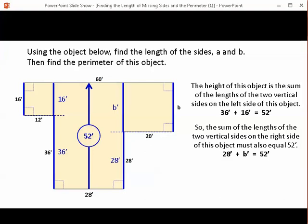So we have 28 out of 52. So if we subtract 28 from 52, that gives us 24 feet. So we now know the length of side B is 24 feet.